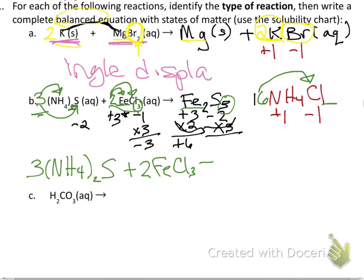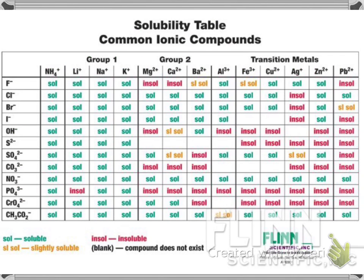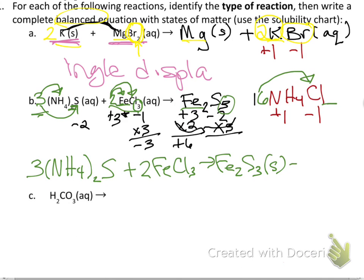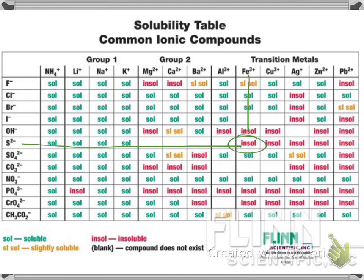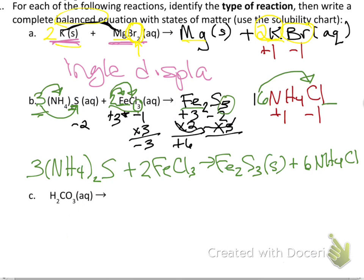The complete balanced equation is: 3(NH₄)₂S (aq) + 2FeCl₃ → Fe₂S₃ + 6NH₄Cl. I check Fe₂S₃ on the solubility chart — iron and sulfur — and it's insoluble, so I write (s). For NH₄Cl: NH₄ is always soluble with no exceptions, and chloride is generally soluble, so I write (aq). The complete balanced reaction is finished, and this confirms it's a double displacement reaction.